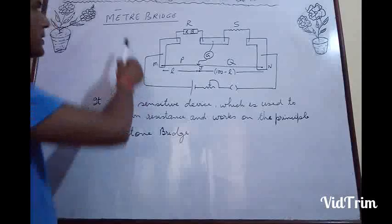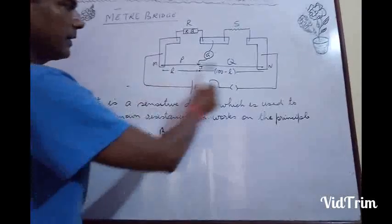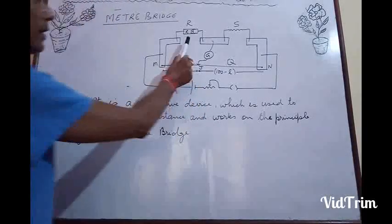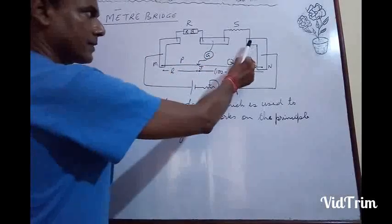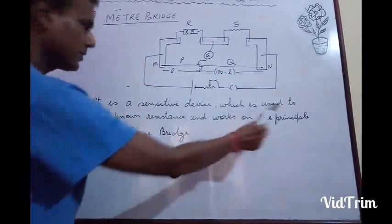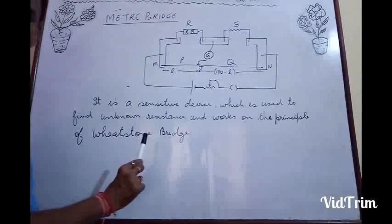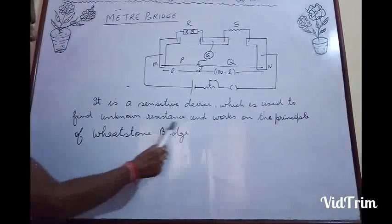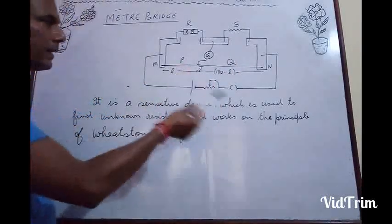Now we will see the meter bridge. A simple diagram is drawn here. MN is a wire of length 100 centimeters, or in other words, 1 meter. R or P stands for resistance box, from which one can take out different resistances. And S is the unknown resistance. A meter bridge is a sensitive device which is used to find an unknown resistance, and it works on the principle of the Wheatstone bridge.